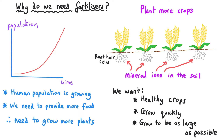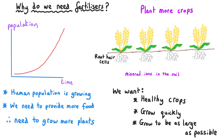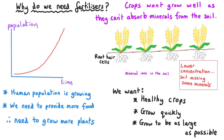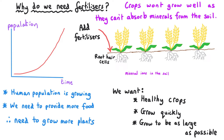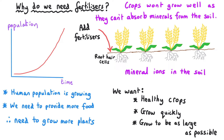Over time, the concentration of these ions decreases, and so that means future crops perhaps wouldn't grow so well unless farmers and gardeners took some steps to intervene. How they do this is they add fertilisers to the soil, and those fertilisers contain the mineral ions that are missing from the fields.